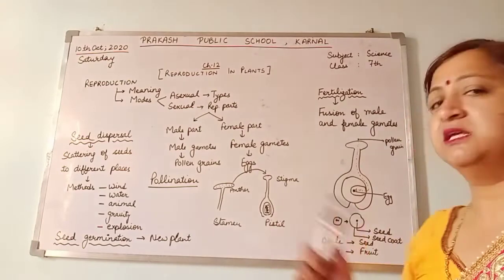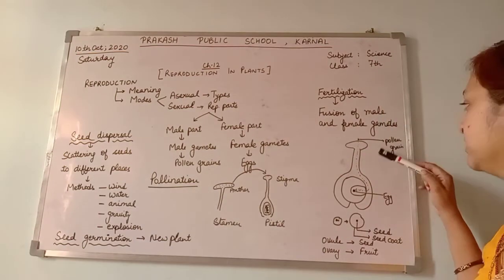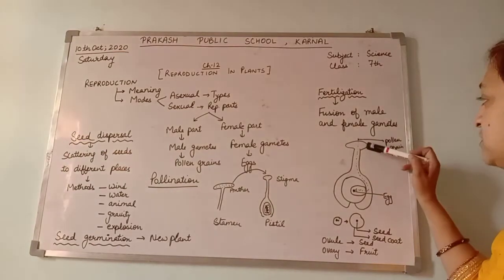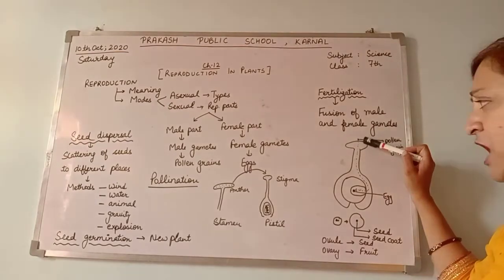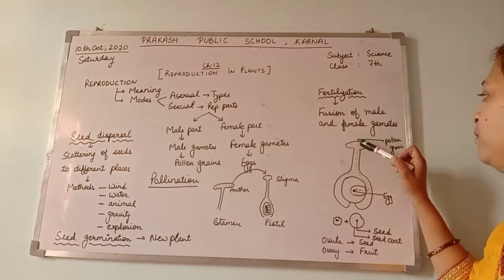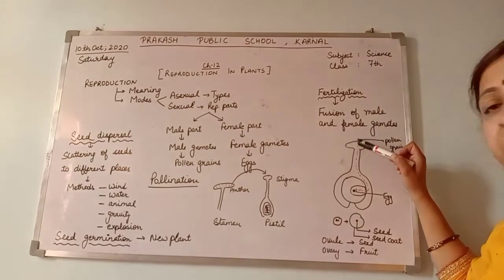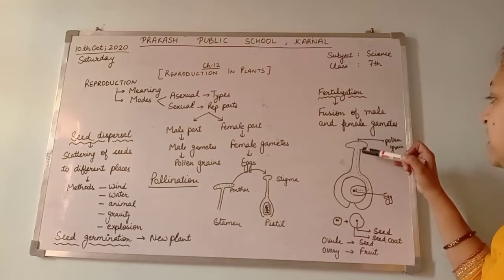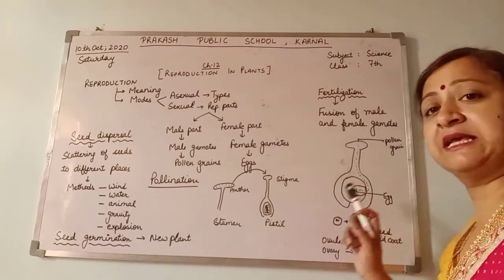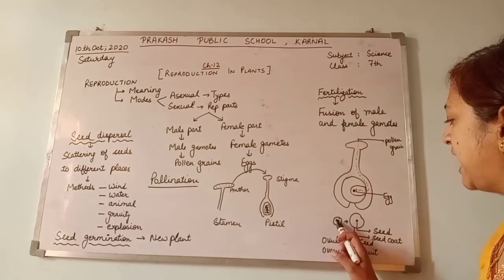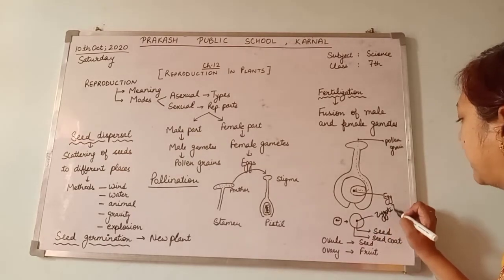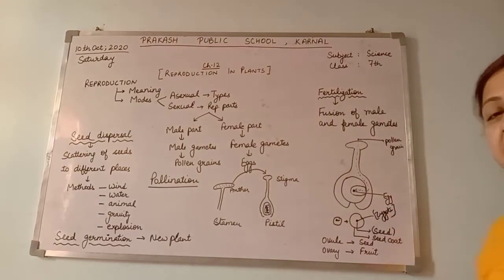After fertilization, the product formed is known as zygote. Children, this diagram will make it more clear. This is a pollen grain that is stuck to the stigma of the pistil. After pollination, the pollen grain travels from the stigma down the style and into the ovary, where the ovule contains the egg. It fuses with the egg, and after fusion this becomes the zygote. The zygote structure is then known as seed, and its outer covering is known as the seed coat.